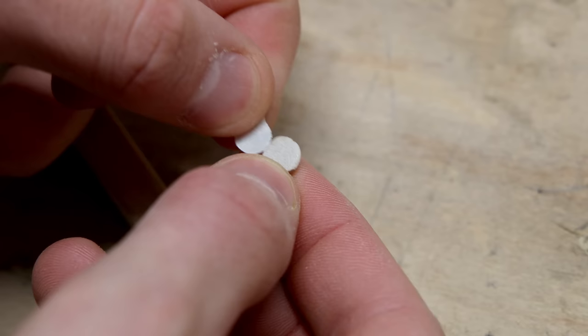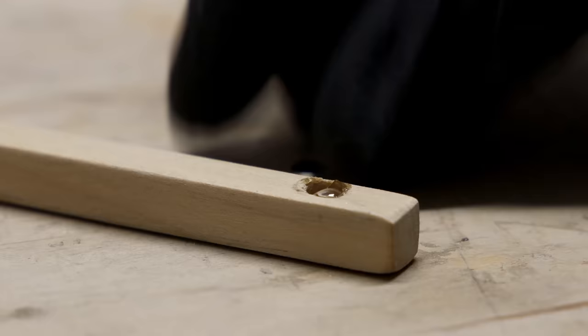I removed the adhesive backing prior to attaching the magnets. It typically doesn't work well for applications like this. Then I filled the holes with super glue and put the magnets over the opening.